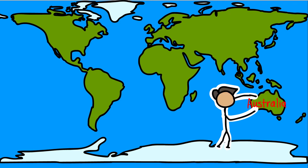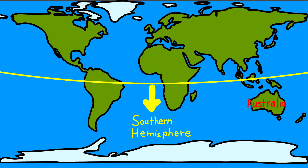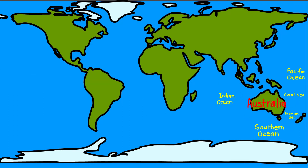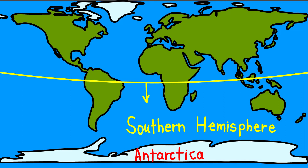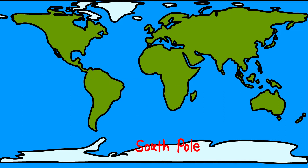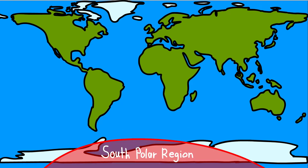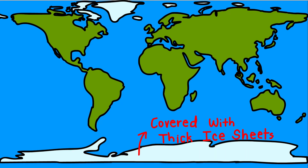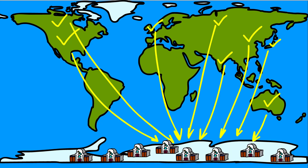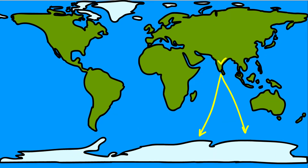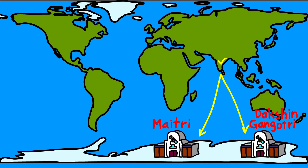Australia is the smallest continent and lies entirely in the southern hemisphere. It is surrounded on all sides by oceans and seas, and is called an island continent. Antarctica, located completely in the southern hemisphere, is a huge continent. The South Pole lies almost at its center. It is permanently covered with thick ice sheets and there are no permanent human settlements. Many countries have research stations in Antarctica, including India, with stations named Maitri and Dakshin Gangotri.